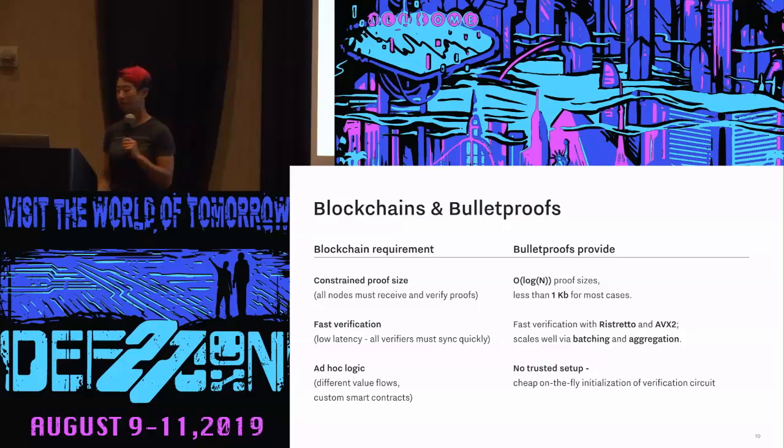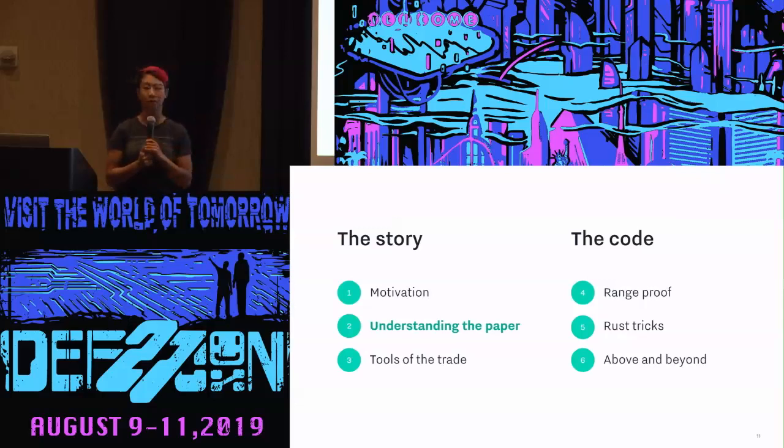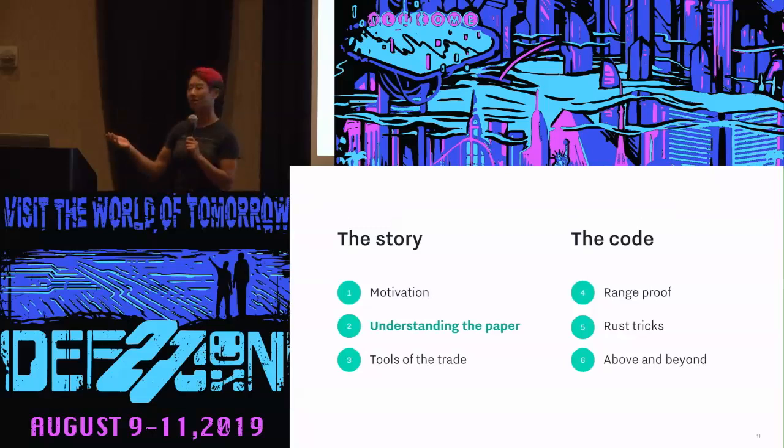That's why we at Chain picked Bulletproofs. We were building a confidential blockchain protocol at the time. So we said, let's implement this paper — it had just come out in 2017. Our next step was to actually understand how the paper worked, and that sort of felt like this.